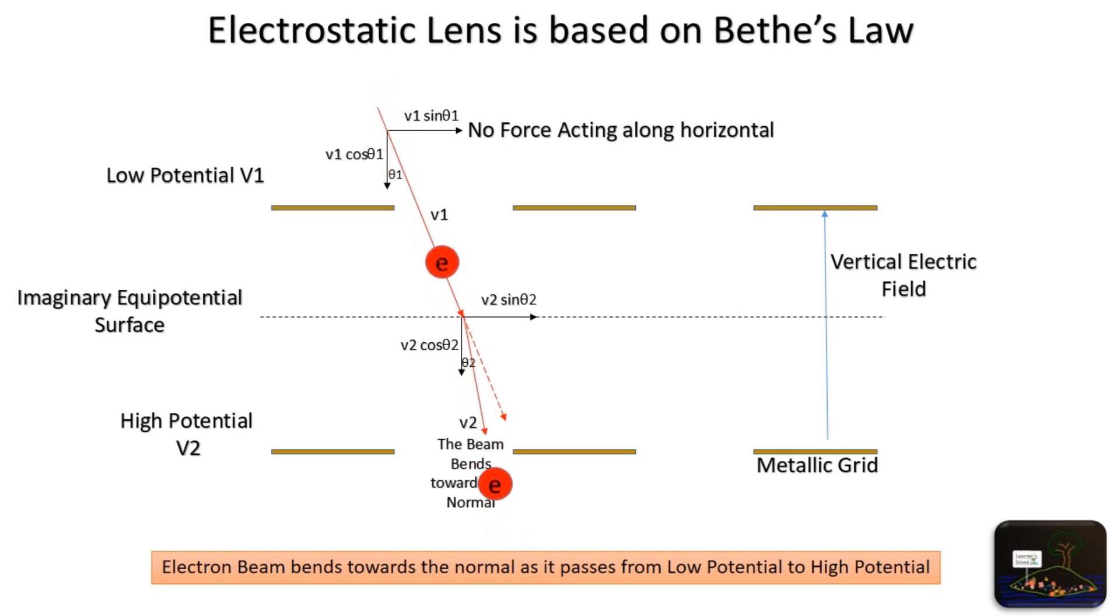When an electron beam travels from low potential region to high potential region, the beam bends towards the normal. Same property is used in electrostatic lens.